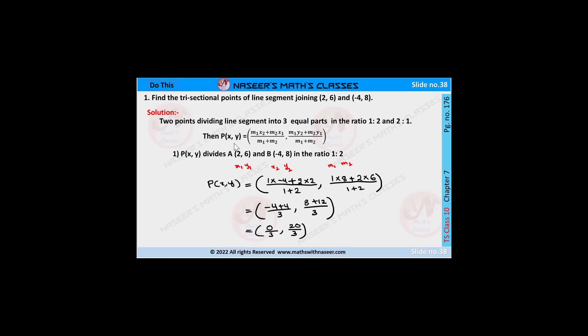If P(X, Y) divides the line segment in the ratio M1:M2, then the required point P(X, Y) is written as: X = (M1·X2 + M2·X1) / (M1 + M2), Y = (M1·Y2 + M2·Y1) / (M1 + M2).